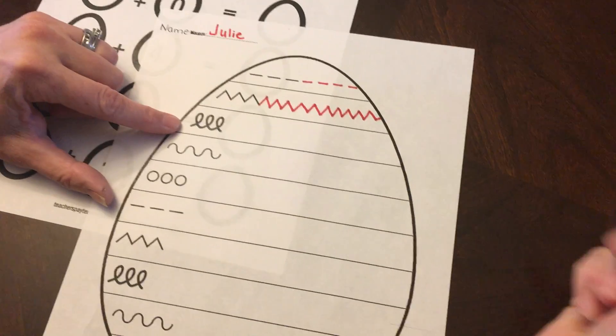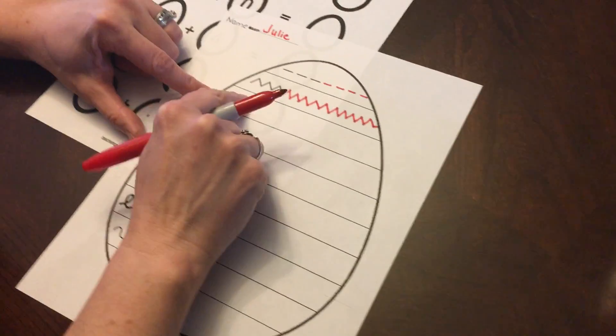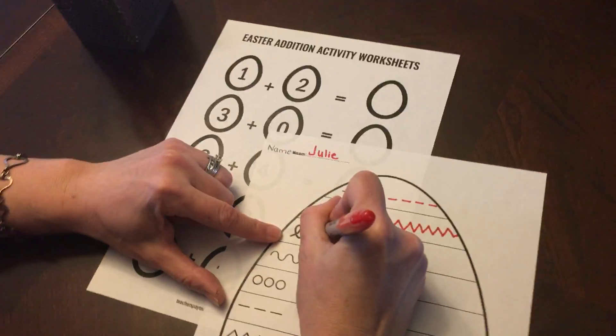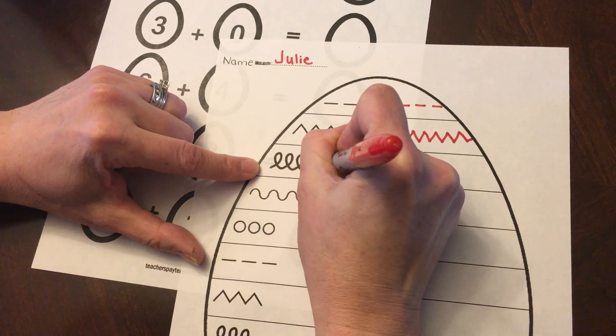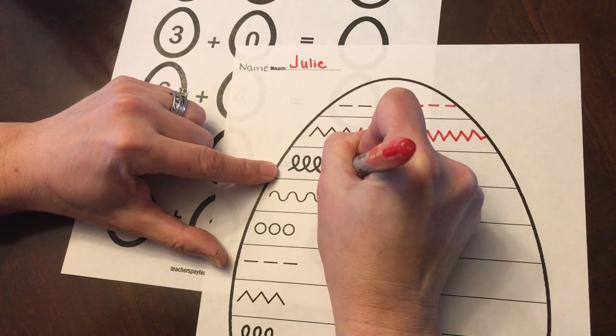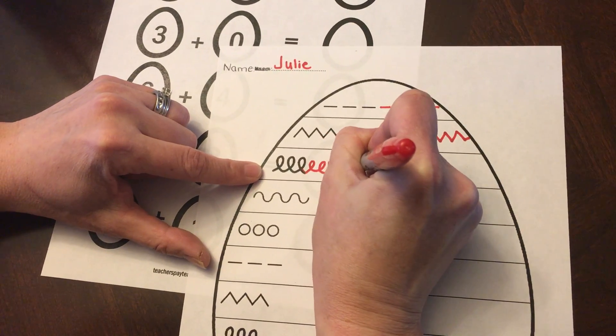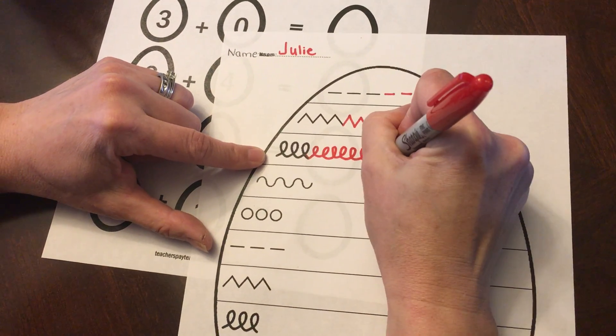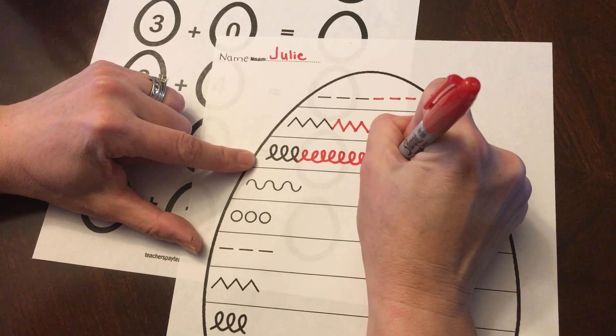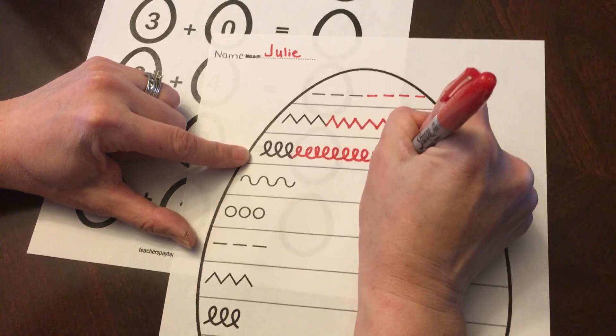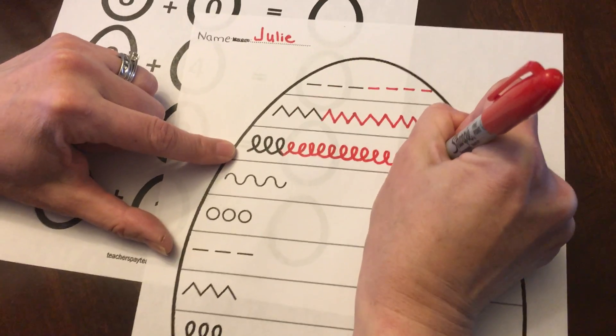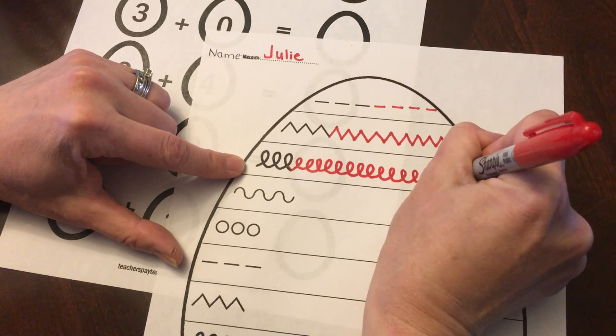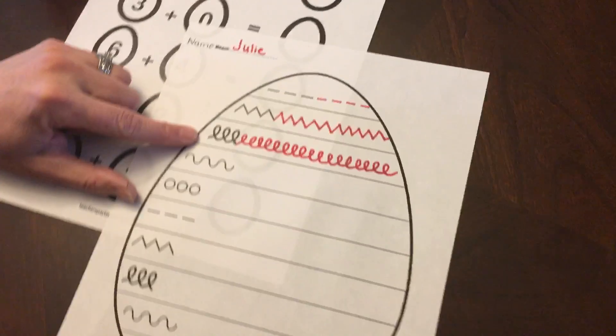We are done with that one. This I like to call a loop-de-loop. It's like we're on a roller coaster that's going around and around, so let's try that. Loop, loop, loop. Miss Julie is definitely doing it different than how the egg started, but I am doing my best. It's hard with a bigger marker, but I wanted to use my red permanent marker today.